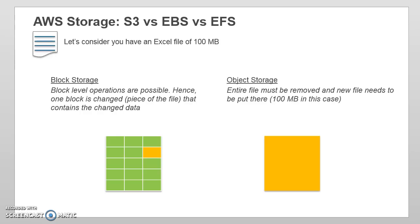Before we move further, we need to understand the difference between block level storage and object level storage. That will help us understand why there are different offerings available like S3 and EBS. To understand that, I'm taking an example of a file — let's say you have an Excel file which is 100 MB in size.